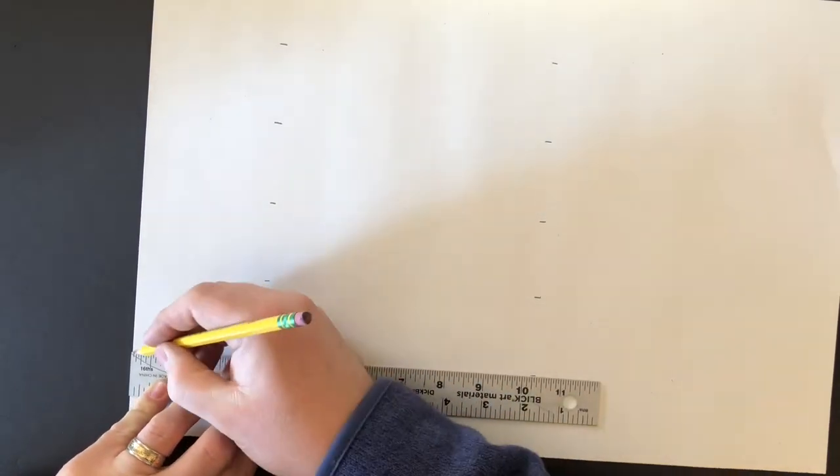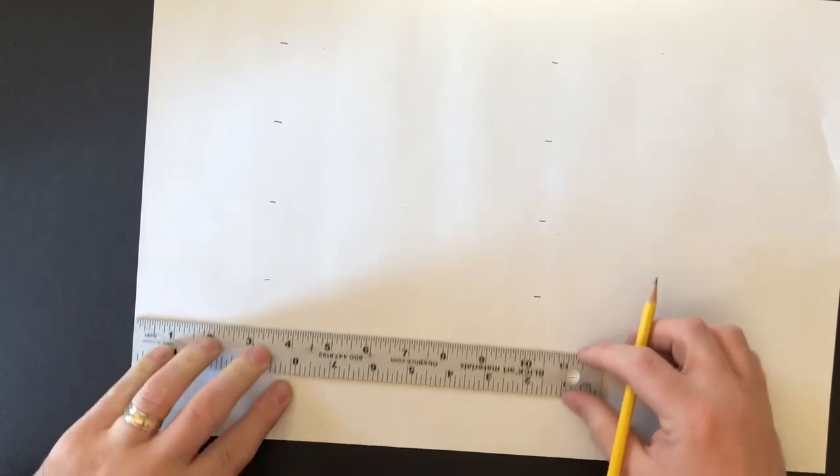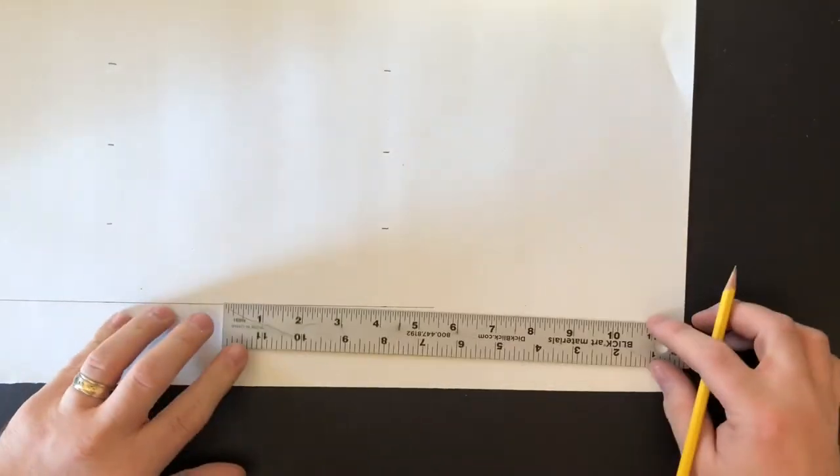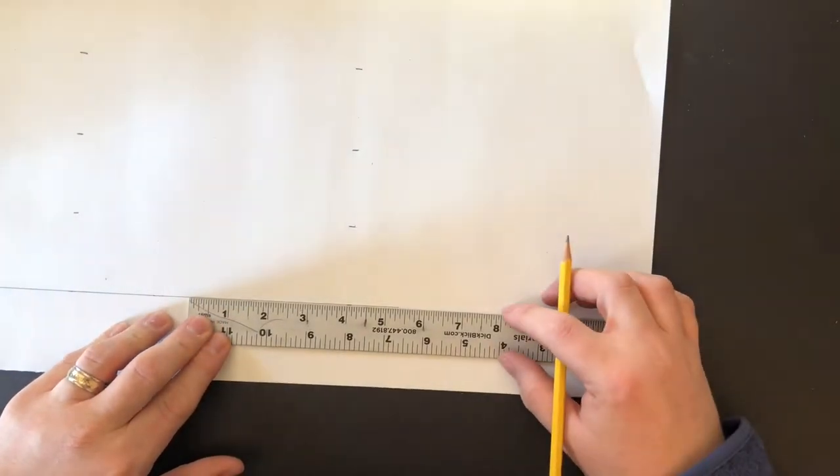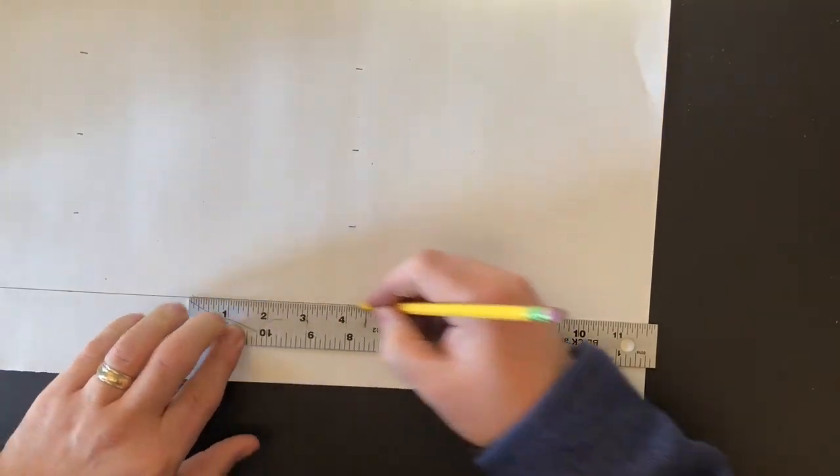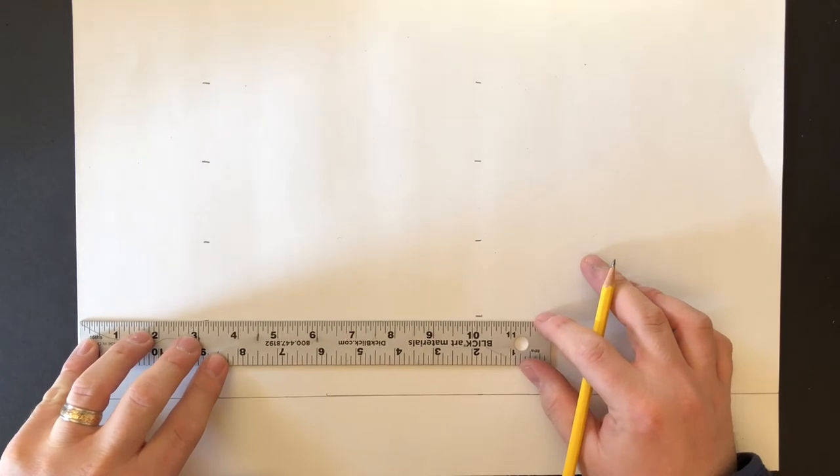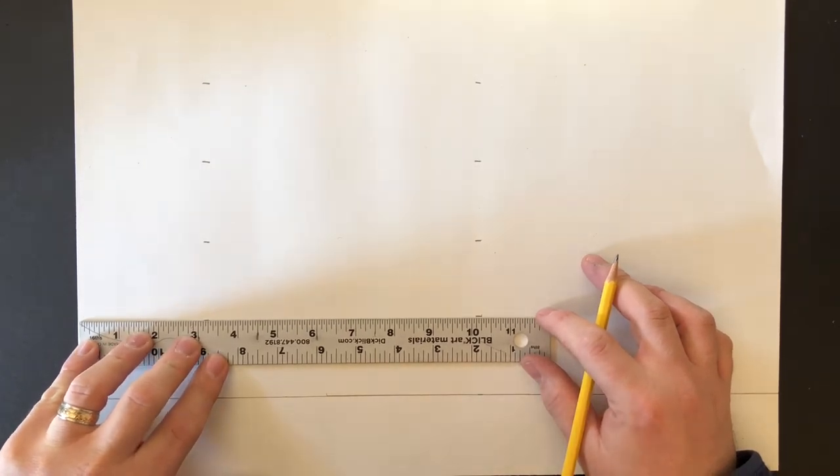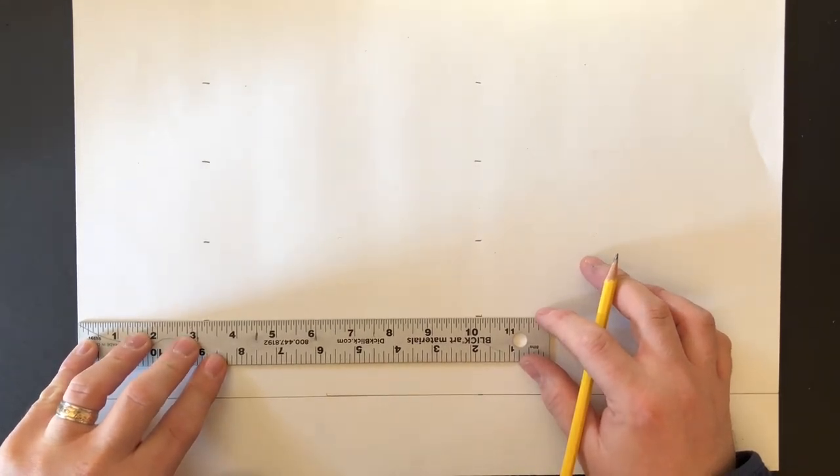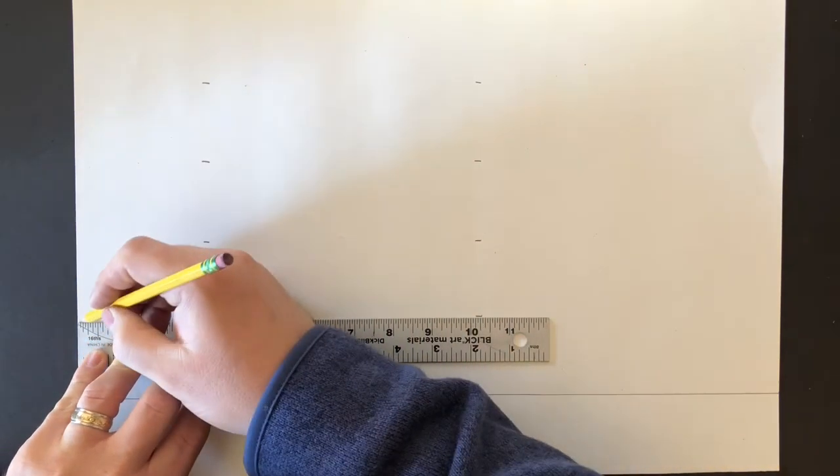To get the rest of the paper, if your paper's too long, I'm just going to line my ruler up with the line. Make sure it's straight, get to the end of the paper. Do that all the way across.